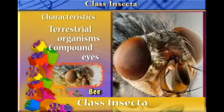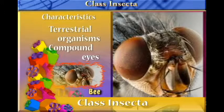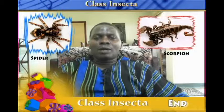They are widely distributed and release nitrogenous wastes in the form of uric acid. Next time we shall discuss the class Arachnida, where we shall look at the spiders, ticks, mites, and scorpions. Thank you.